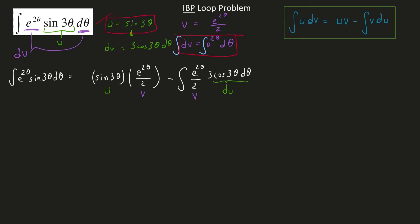See how we chose u as the trig term? My u will be the trig term in the second ibp, and my dv was the e. My dv will have the e term in my second ibp as well.